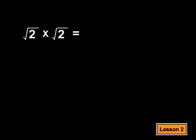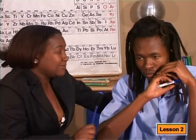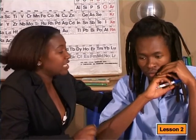That will be root 2 squared, which is 2. And 2 is a rational number, while root 2 is not. So, by multiplying a surd by itself, we would get a rational number.